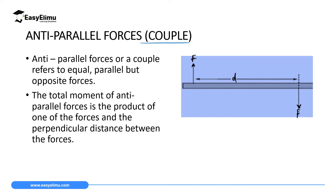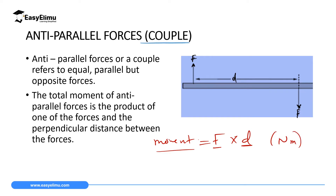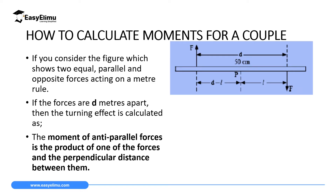To get the moment of a couple or antiparallel forces, we take the product of one force times the distance between them. Since the forces are equal and opposite, we take one force F multiplied by the distance d between them, and that gives the moment of the couple in newton meters, which is the SI unit for moment.